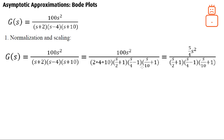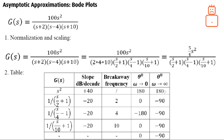So I can write the original transfer function in this normalized and scaled form. The second step is drawing a table — this table has all information about each term of this transfer function, each zero and pole. Let's start with the zeros: we have two zeros at the origin. Each zero contributes a plus 20 dB per decade slope, so two zeros total give 40 dB per decade. They don't contribute any breakaway frequency.